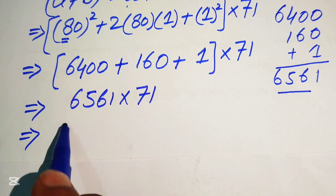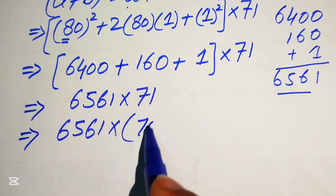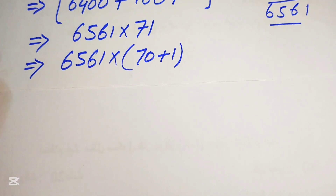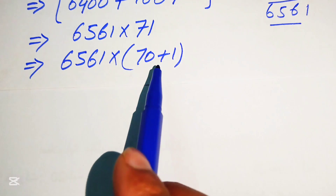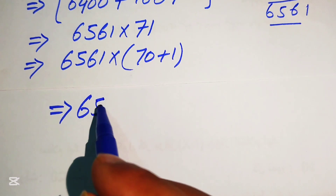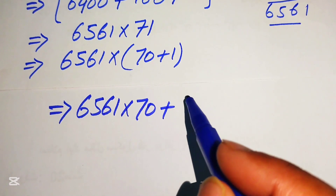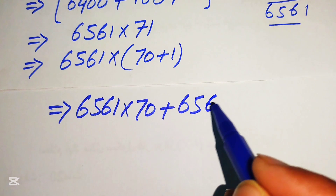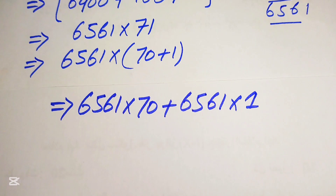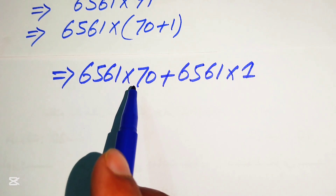We break 71 as 70 plus 1, so we write 6561 multiplied by 70 plus 1. Distributing, this becomes 6561 multiplied by 70, plus 6561 multiplied by 1.